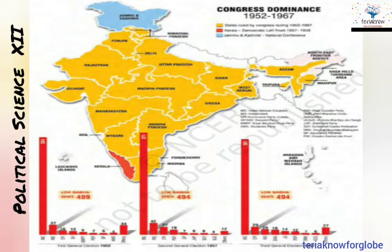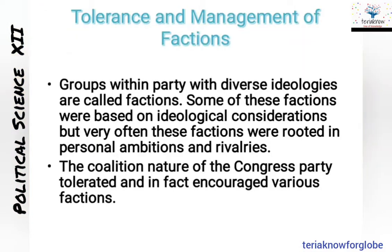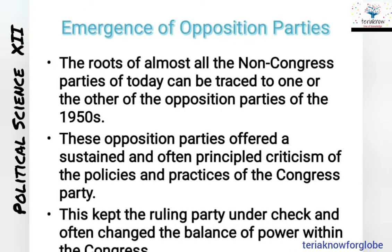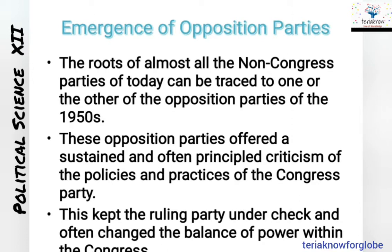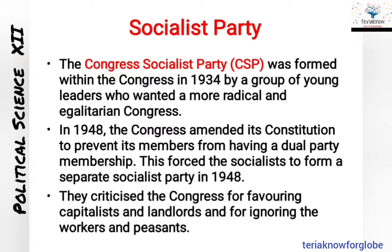We talked about the nature of Congress dominance, Congress dominance of states and their seats, and tolerance and management of factions — groups within a party with diverse ideology. We also discussed the emergence of opposition parties, because Congress itself was the reason for the emergence of political parties with different ideologies. Due to different factions with different ideologies within the same group, members tried to create separate groups, leading to the emergence of opposition parties.